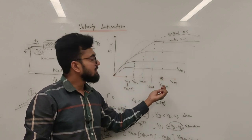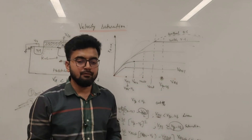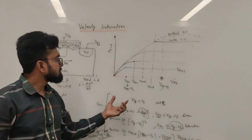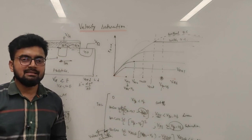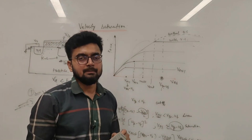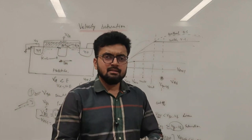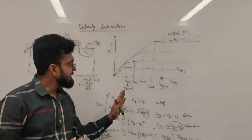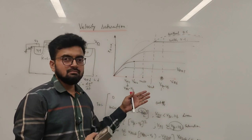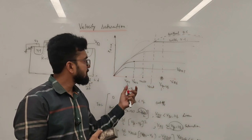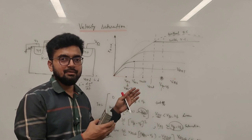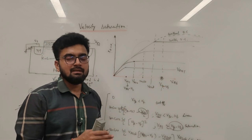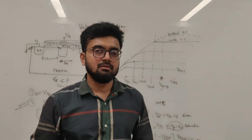After that point, velocity saturation comes into picture and saturation is achieved a bit earlier than regular saturation. Therefore, for large VGS, we see the effect of velocity saturation, which lowers the current in the MOSFET. In long channel devices, velocity saturation does occur but happens much beyond the linear and saturation regions of interest, so it is not significant there.